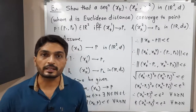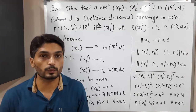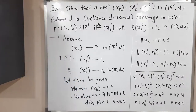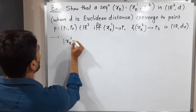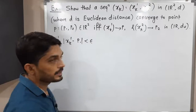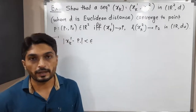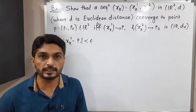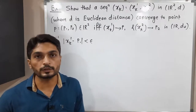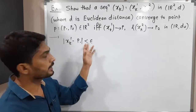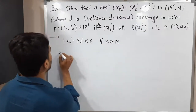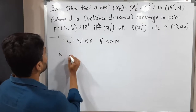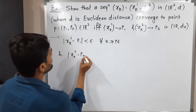Taking the positive square root of both sides, we have |xk1 - p1| less than epsilon. When we take the positive square root, the square and square root cancel, and since epsilon is already a positive real number, we simply get epsilon. This holds for all k greater than or equal to N. Similarly, |xk2 - p2| less than epsilon for all k greater than or equal to N.